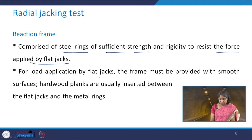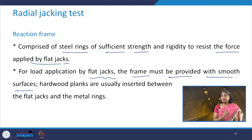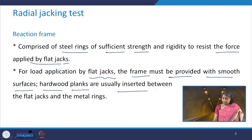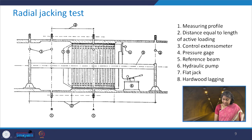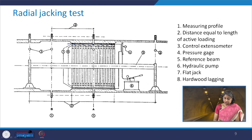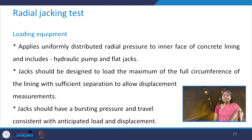For the load application done by the flat jacks, the frame must be provided with smooth surfaces. Therefore, the hardwood planks are inserted between the flat jacks and the metal rings. This has already been shown in the figure — the hardwood laggings are provided between the reaction frame and the flat jack.